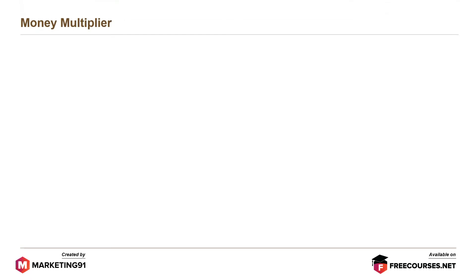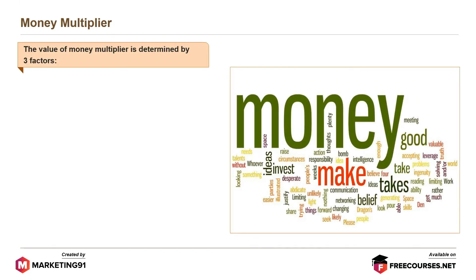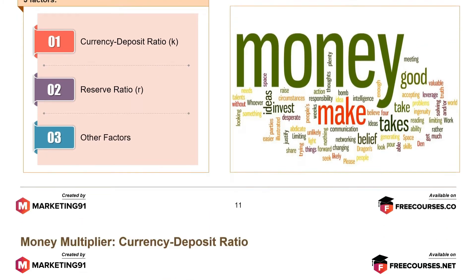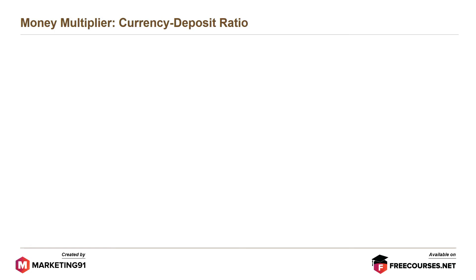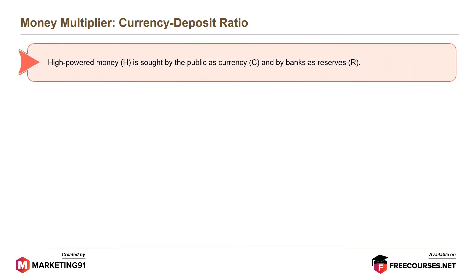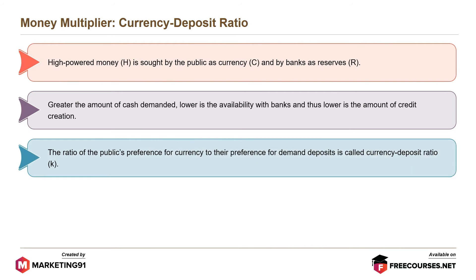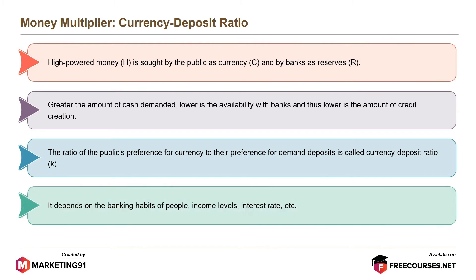The value of money multiplier is determined by three factors: currency deposit ratio or K, reserve ratio R, and other factors. High powered money H is sought by the public as currency C and by banks as reserve R. Greater the amount of cash demanded, lower is the availability with banks and thus lower is the amount of credit creation. The ratio of the public's preference for currency to their preference for demand deposits is called currency deposit ratio. It depends on the banking habits of people, income levels, interest rate, etc.